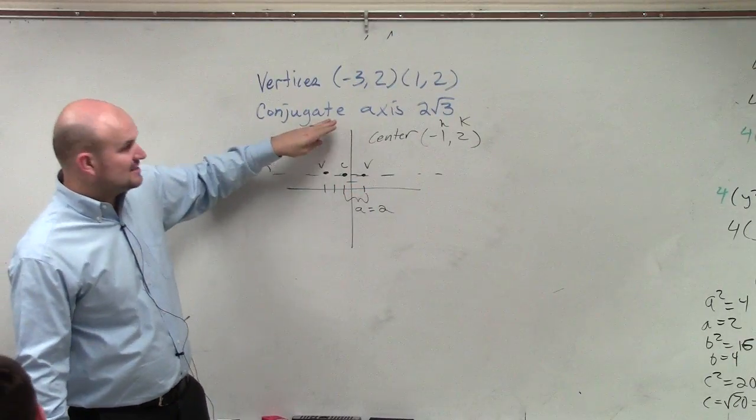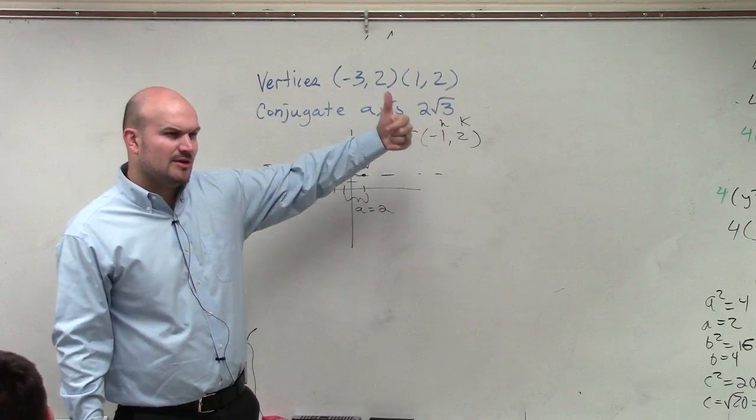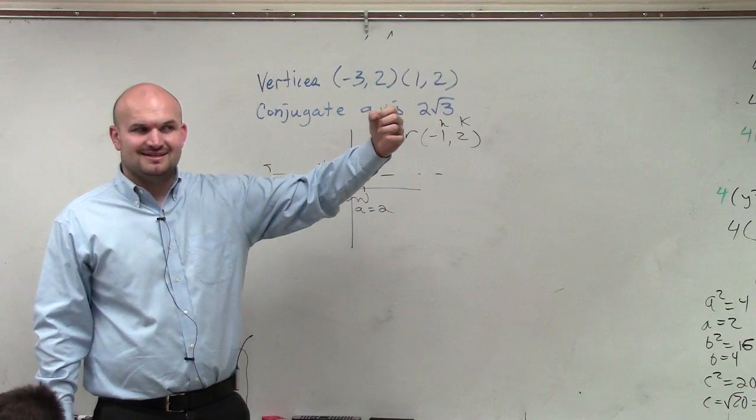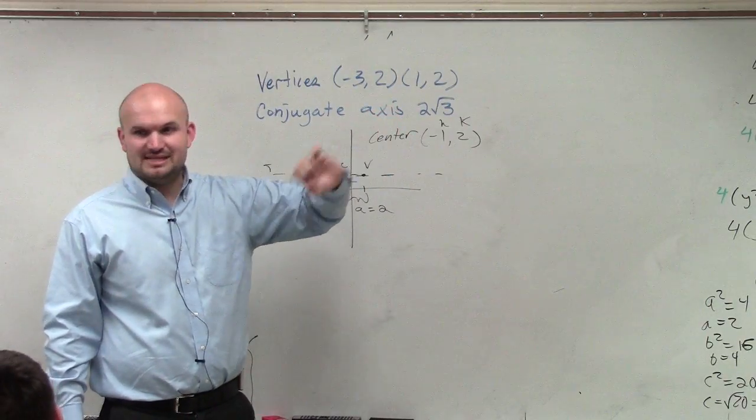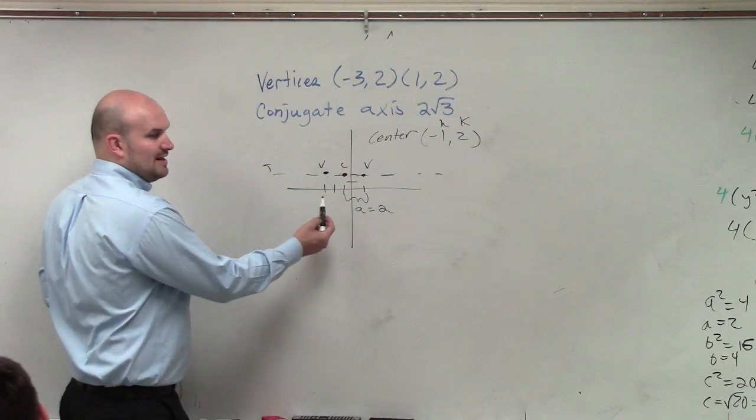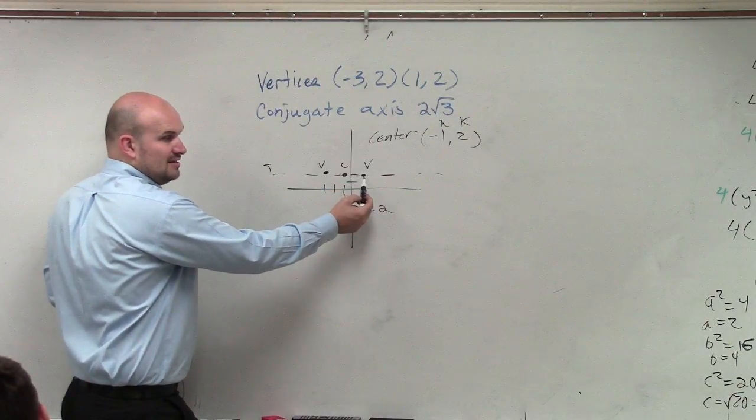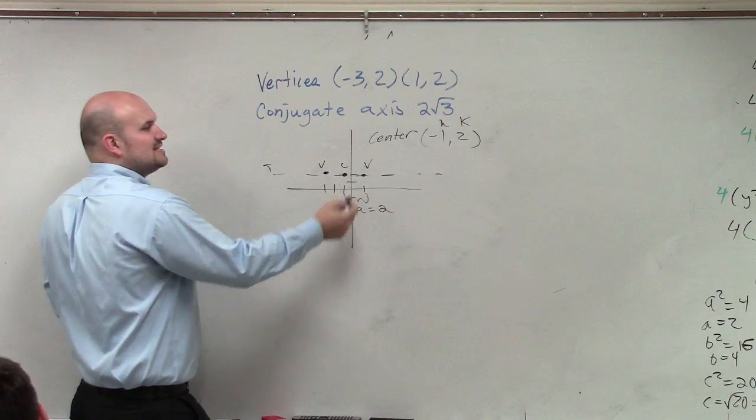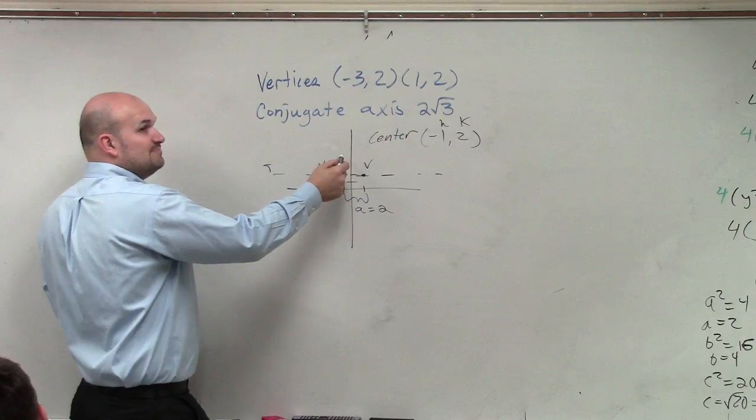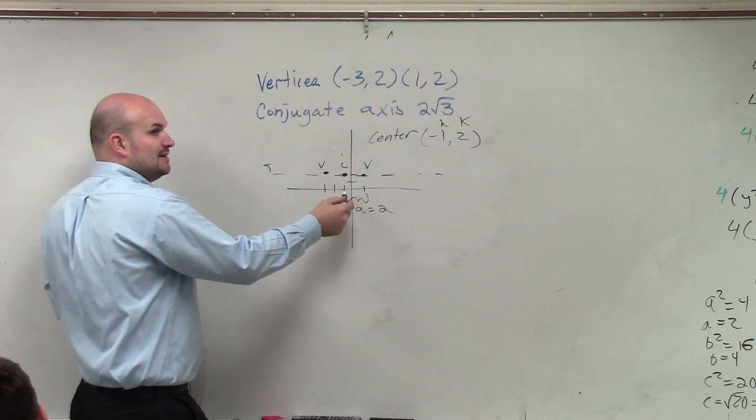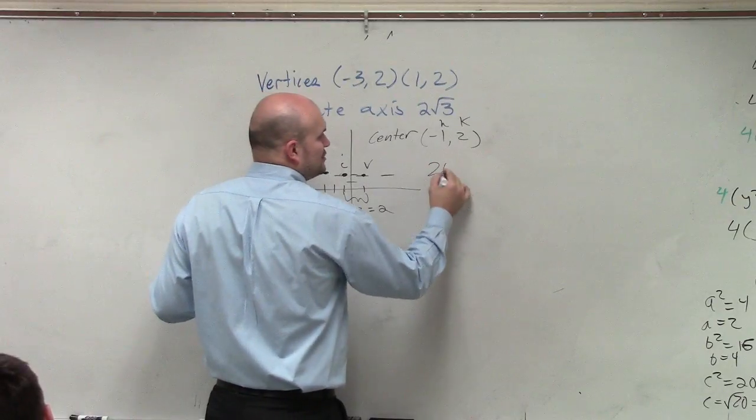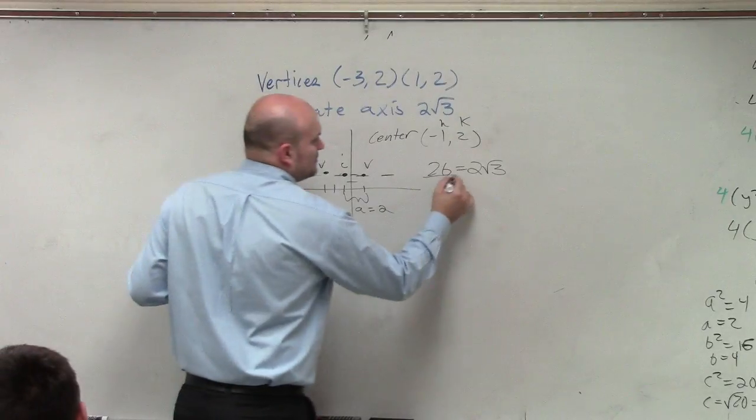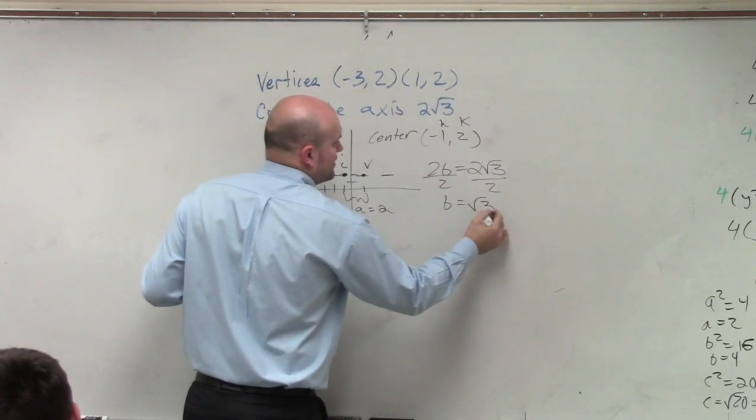So we know the conjugate axis is 2√3. But we've got to remember, what does the conjugate axis represent? The conjugate axis represents the minor axis—the distance between co-vertex to co-vertex. So think about it, guys. If distance from center to vertex is a, then vertex to vertex would be 2a. So if distance from center to co-vertex is b, then co-vertex to co-vertex would be 2b. Therefore, 2b equals 2√3. Divide by 2, and b equals √3.